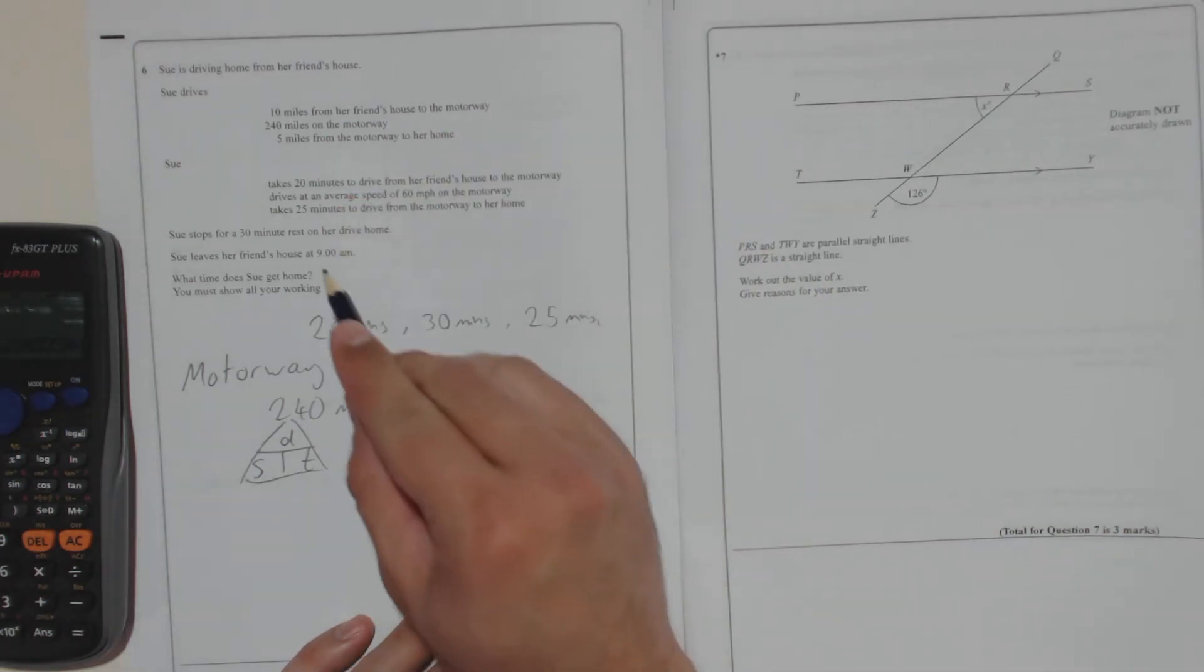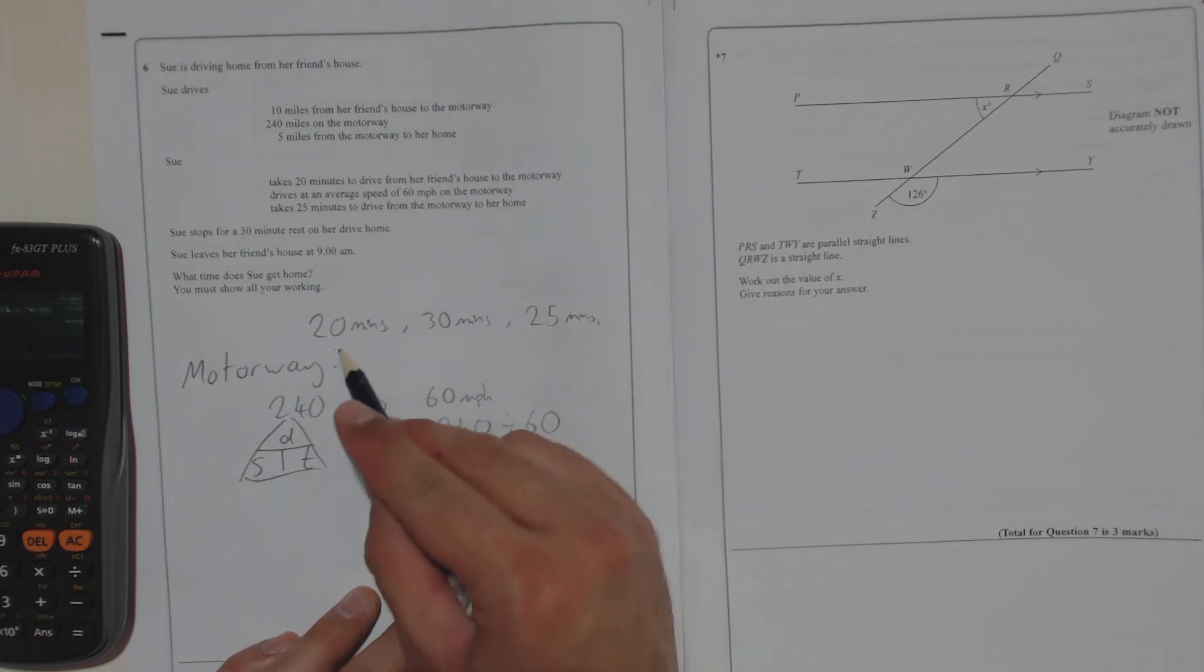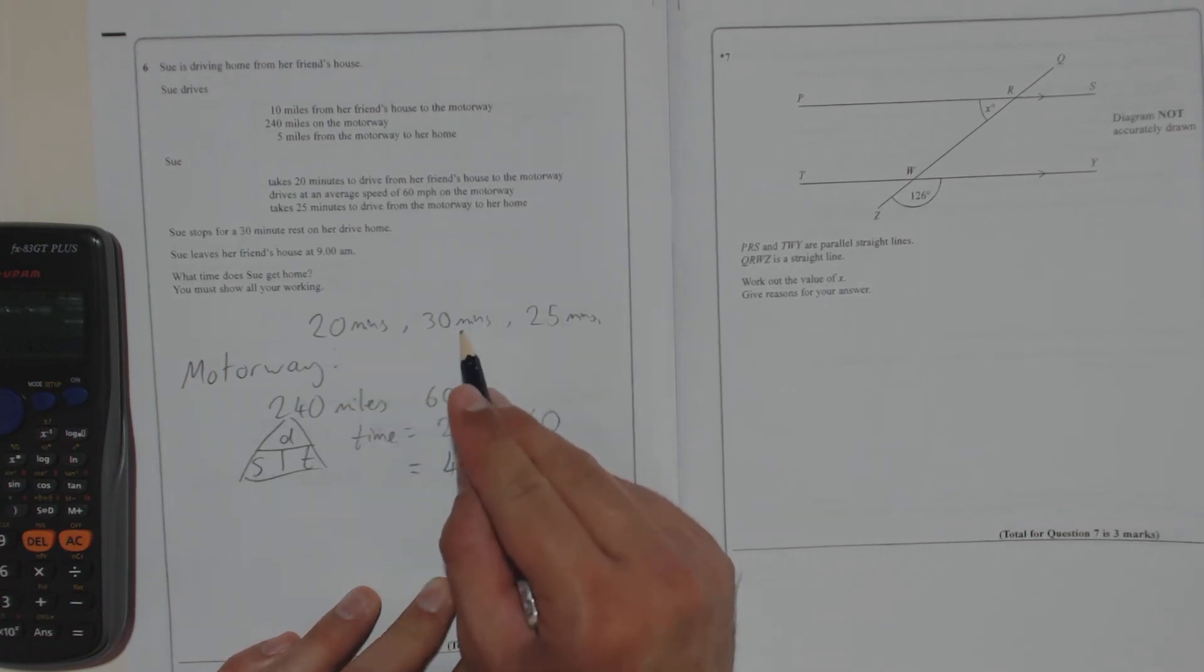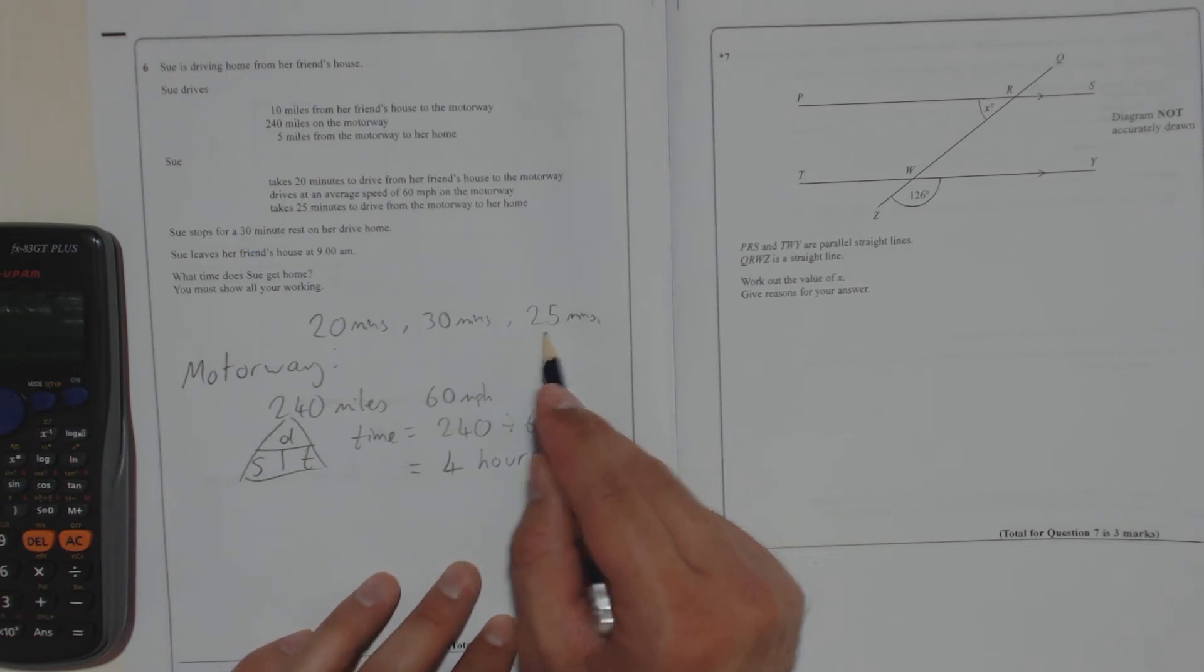So it's 9 o'clock. Should we add it all up? Yeah, let's add it all up. So you've got 20 minutes, 30 minutes. That's 50 minutes plus another 25 minutes. That's an hour and a quarter.